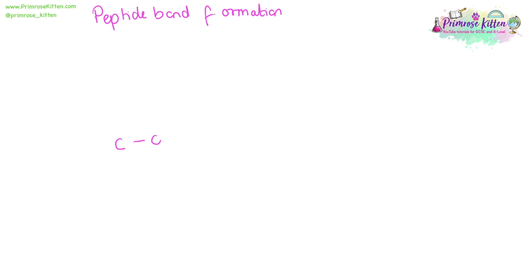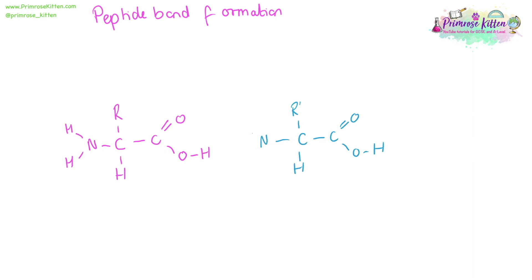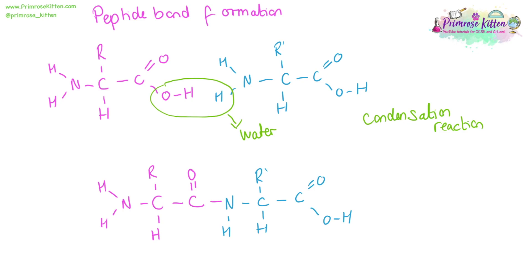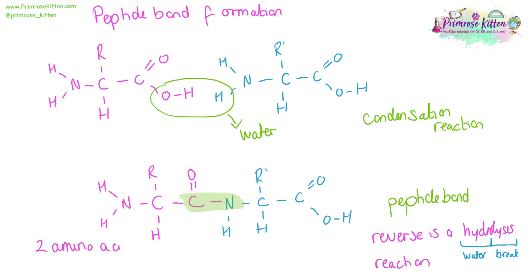Between two amino acids, we are going to get a peptide bond formed. Here we have our two amino acids with an R-group each. In between the carboxylic acid group of one and the amino group of the other, a peptide bond is formed. Water is going to be lost in this, making it a condensation reaction. The peptide bond forms between the carbon of one and the nitrogen of the other. This reaction is reversible by hydrolysis — 'hydro' meaning water, 'lysis' meaning break — and you will get two amino acids back out.